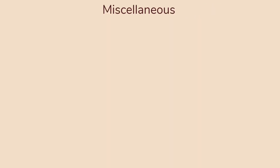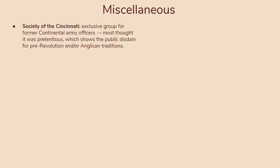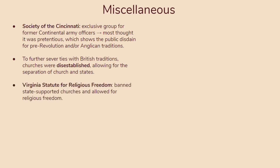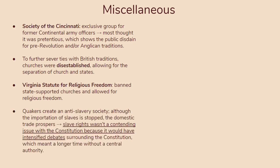Now let's talk about a couple of miscellaneous topics — key terms from the textbook. First, the Society of the Cincinnati: an exclusive group of former Continental Army officers that the public mostly thought was a pretentious society, showing public disdain for pre-revolutionary and Anglican traditions. Additionally, to further sever ties with British traditions, churches were disestablished and de-Anglicanized, allowing for the separation of church and state. You also have the Virginia Statute for Religious Freedom, which banned state-supported churches and allowed for religious freedom. Another group to know is the Quakers, who created an anti-slavery society. Although the importation of slaves stopped, the domestic trade continued to prosper.